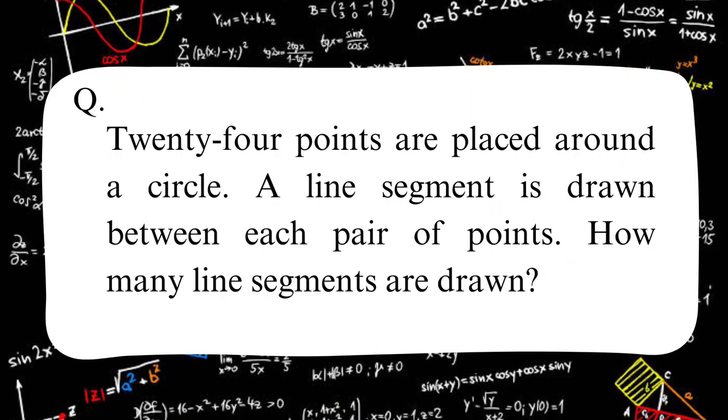The question that we will be trying to find an answer is: 24 points are placed around a circle. A line segment is drawn between each pair of points. How many line segments are drawn?